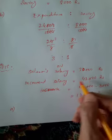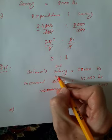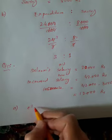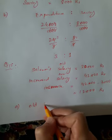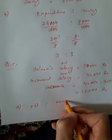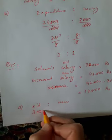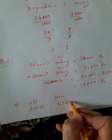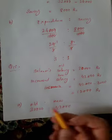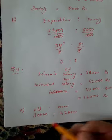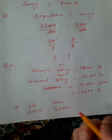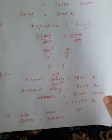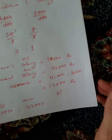Old to new: Old salary was 30,000 and new salary is 42,000. The ratio is 30,000:42,000, which we can simplify.